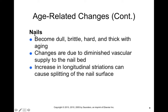Nails also become more dull, brittle, hard, and thicker with aging. These changes are due to diminished blood supply to the nail bed as well as the nail matrix, so nails don't grow as rapidly and grow more weakly. There's also an increase in longitudinal striations that can put you at risk for splitting of the nail surface. Elderly nails are more brittle, so if you give them a task requiring use of their nails, it's more likely they might chip their nail.